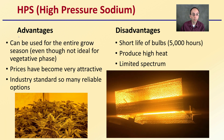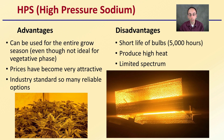High-pressure sodium lights can be used for the entire grow season — even though they're not ideal for the vegetative stage, they still can be used. Prices have become very attractive and reduced quite a bit, and they're considered the industry standard with many reliable options. The reasons some growers elect not to use them include a relatively short bulb life of only about 5,000 hours, a fair amount of heat production, and a limited spectrum.